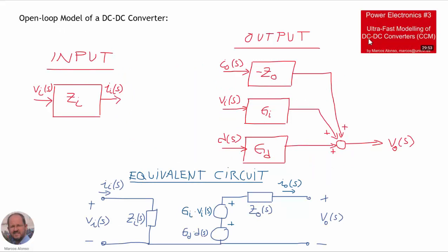As we have seen in previous videos, especially power electronics number three, we can model our DC-DC converter in open loop from the input using the input impedance, and from the output we have three different transfer functions: the output impedance, the audio susceptibility transfer function, and the control-to-output transfer function. We can represent the converter using block diagrams or an equivalent circuit with the input impedance, the control-to-output voltage source, the audio susceptibility voltage source, and the output impedance in series. With this, we can obtain the closed-loop response of the DC-DC converter.